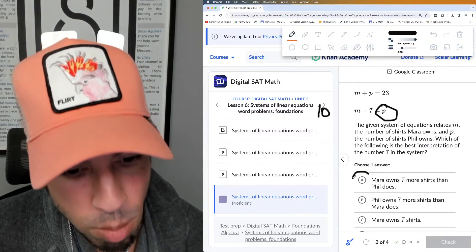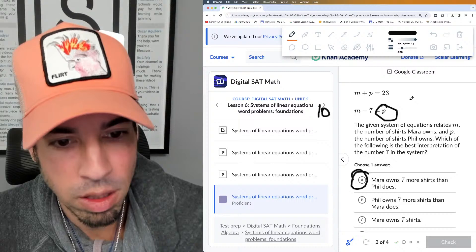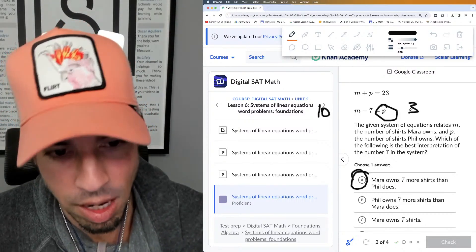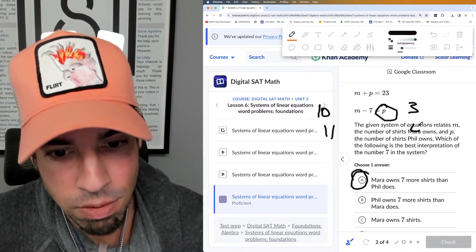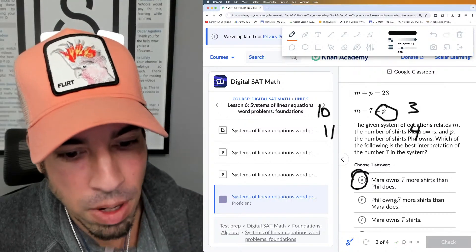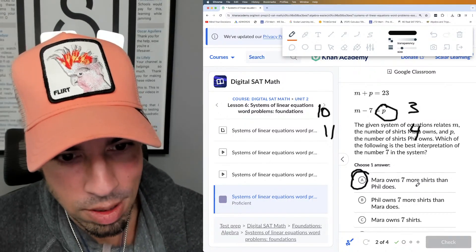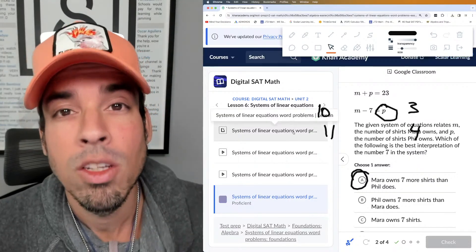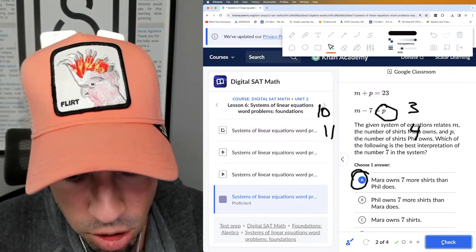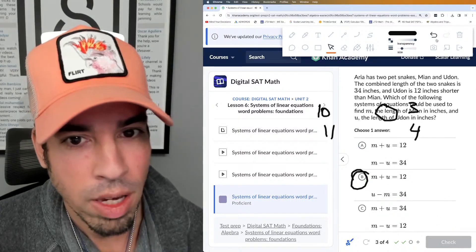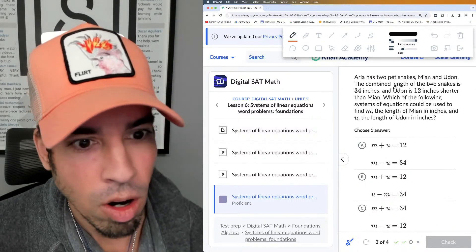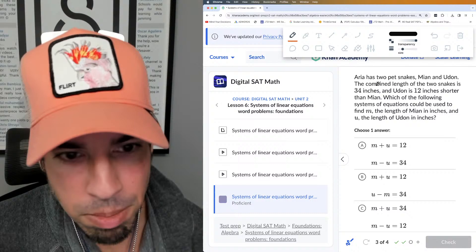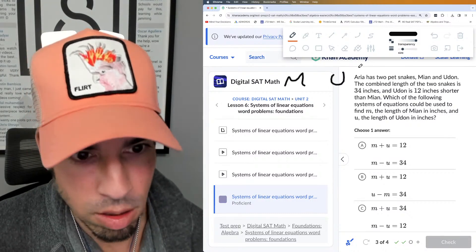So let's see, or we could say this: Mara owns seven more than Phil. And you could just try a couple values, right? 10 and 7, 11 and 4. So what did I say? Mara owns seven—yeah, there it is. Mara owns seven more shirts than Phil does. So you can kind of use some different strategies to figure this out. Plug and chug, boom, done.